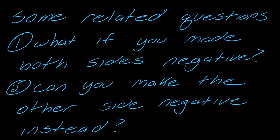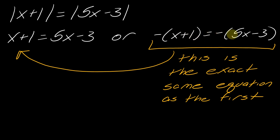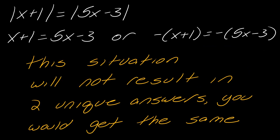What if you make both sides negative? The only way to do that is to put parentheses and a negative on both sides. But this is literally the exact same equation — if you divide each side by negative one, you cancel those negatives and end up back at the original equation. This does not produce two unique equations, so it will not result in unique answers.